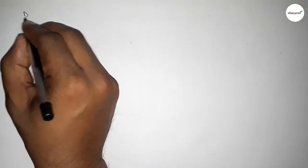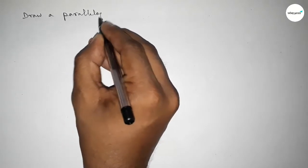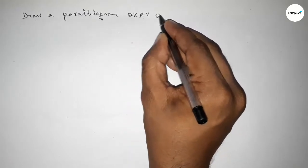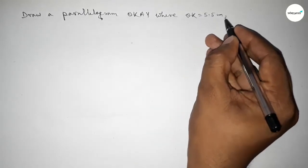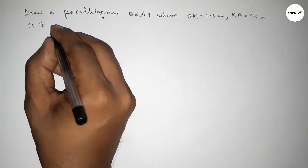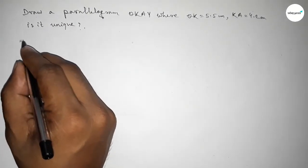Hi everyone, welcome to SI Chair Classes. Today in this video we have to construct a parallelogram with given sides: OK equal to 5.5 centimeters, KA equal to 4.2 centimeters, and determine is it unique. So let's start the video.